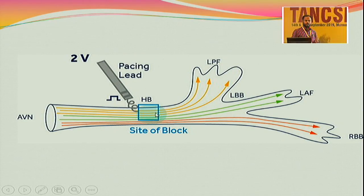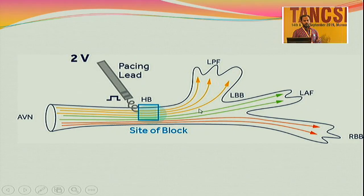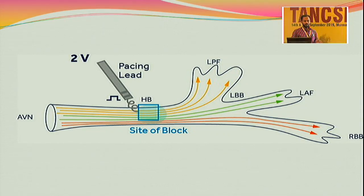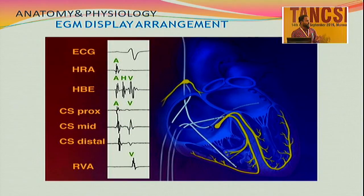All you have to do is perform perfect mapping of the His bundle, find the level of block, and screw the lead distal to that level. Once you cross the level of block, you will get a narrow QRS. There is rarely significant progression of the distal conduction system after pacing. Some worry whether after five or ten years a diseased His bundle could develop further disease — but no, studies have shown that even after 10 to 15 years of complete heart block, disease progression has not occurred. Pacing the His bundle in complete heart block is entirely safe.